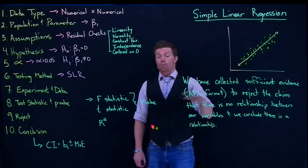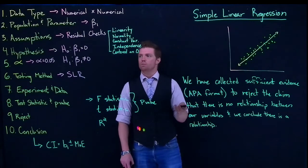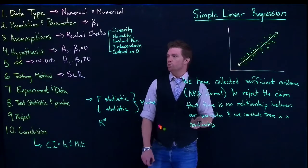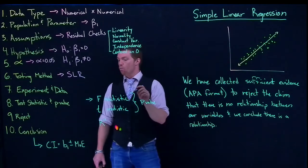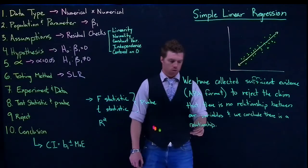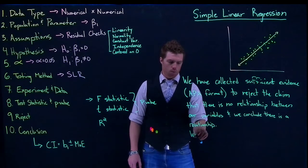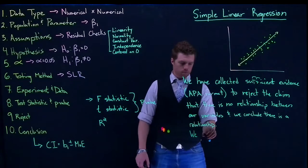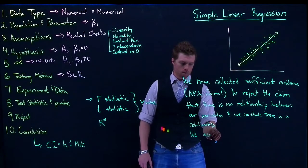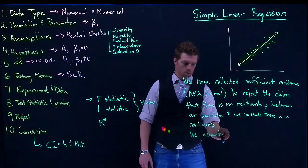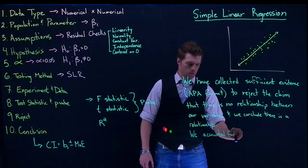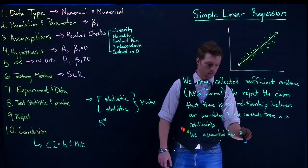So now that we've got this, one other thing that we want to be able to include is we want to include our R-squared. So we can say that we accounted for R-squared percent of the variability.